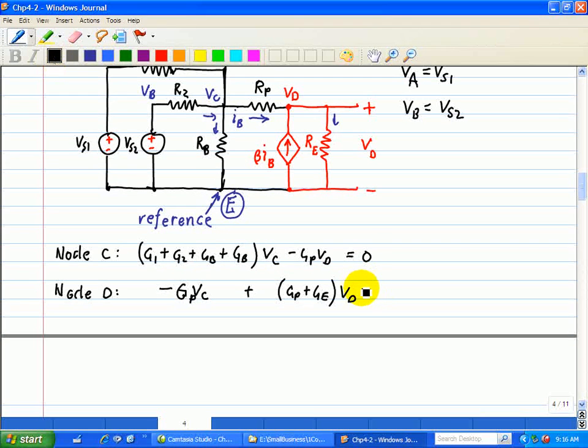And that's set equal to beta IB. Well we note that IB, we'll put it in terms of node voltages. That's just beta multiplied by GP multiplied by VC minus VD.